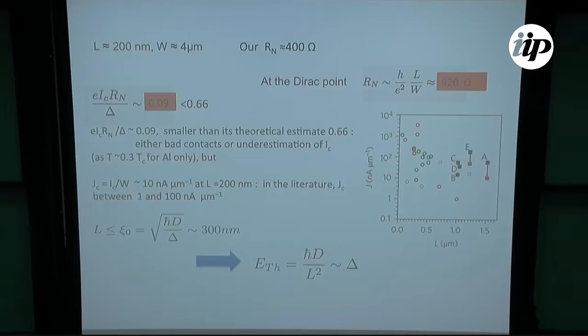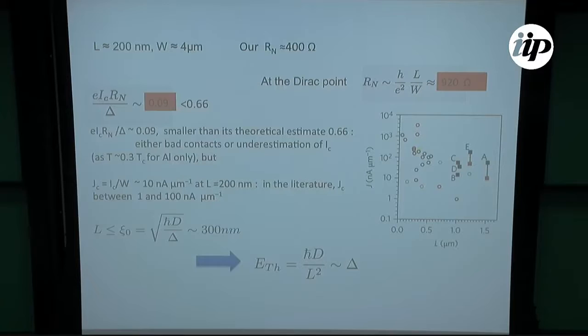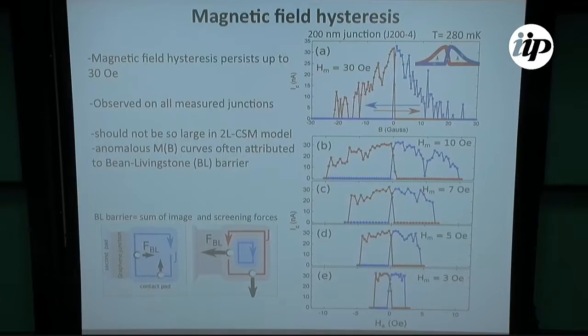However, the critical current density is exactly in the order of the ones that is found also in other junctions. When you put magnetic field orthogonal to the surface, the first thing that happens is a very sharp drop of the critical current in the measurement. And if you increase the field, the critical current stays at the same value, which is practically unmeasurable.